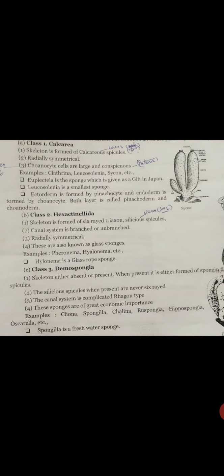Examples include Cliona, Spongilla, Chalina, Euspongilla, Hippospongia, etc. Spongilla is known as the freshwater sponge. So this is all about the general classification of phylum Porifera.